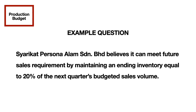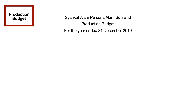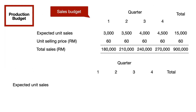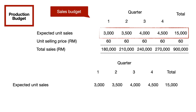Here is the example of information to help you prepare the production budget. Starting with the budget title, the first information that you should include is the expected unit sales. To make it easier, you should refer to the previous sales budget prepared. As you can see there, the same units will be used in this production budget.